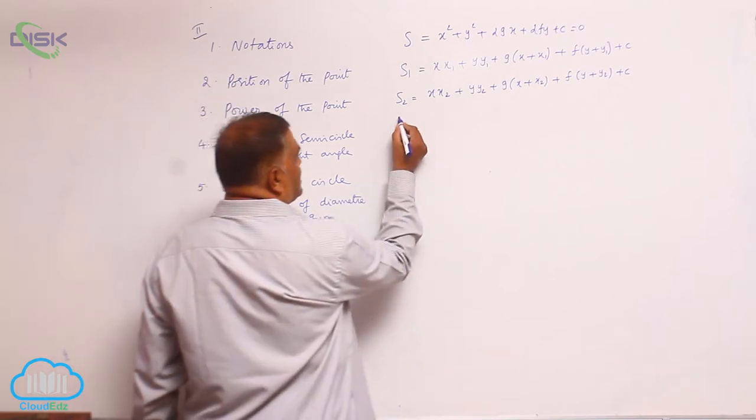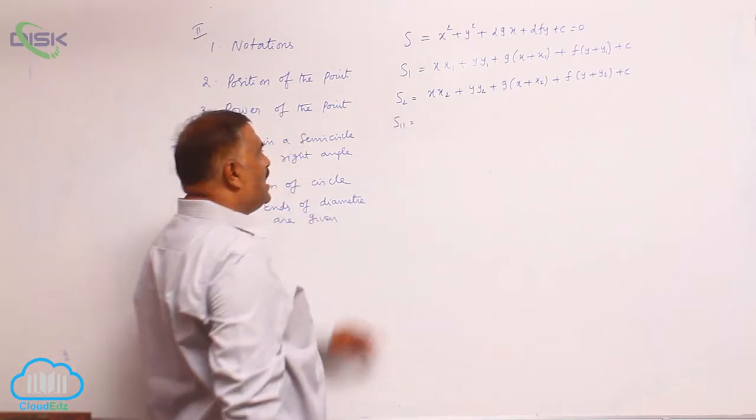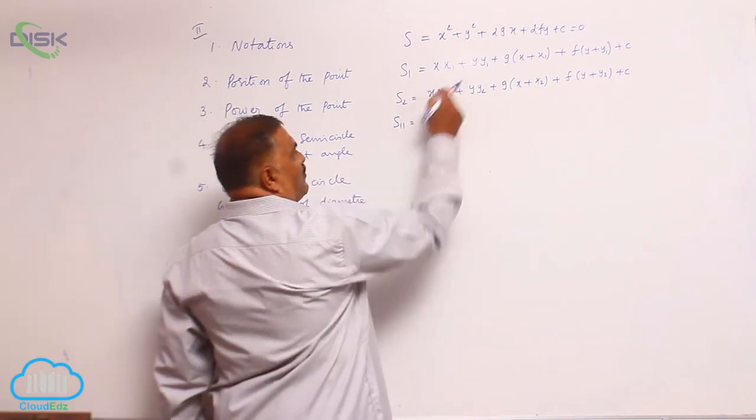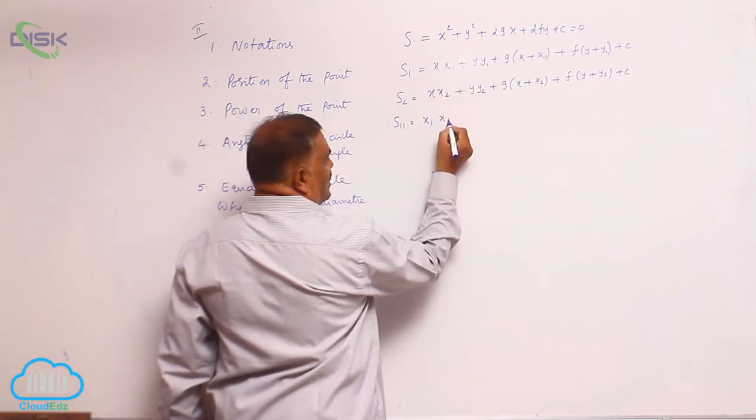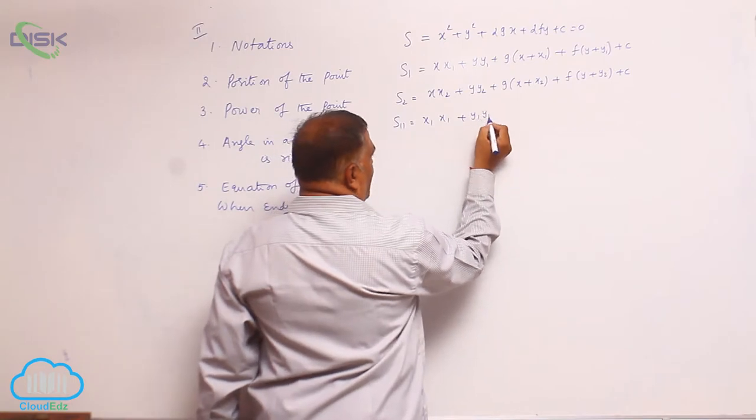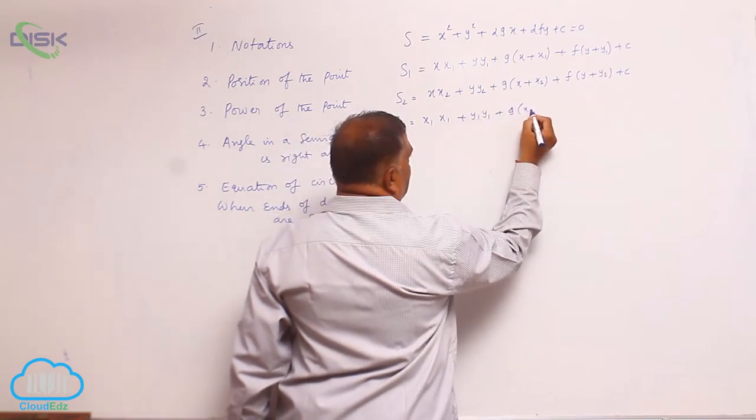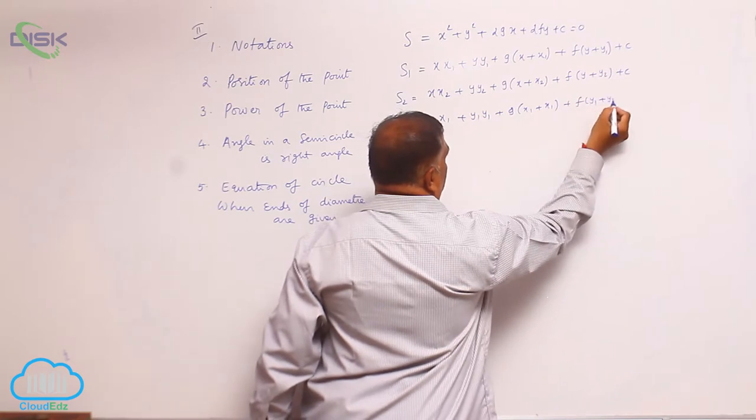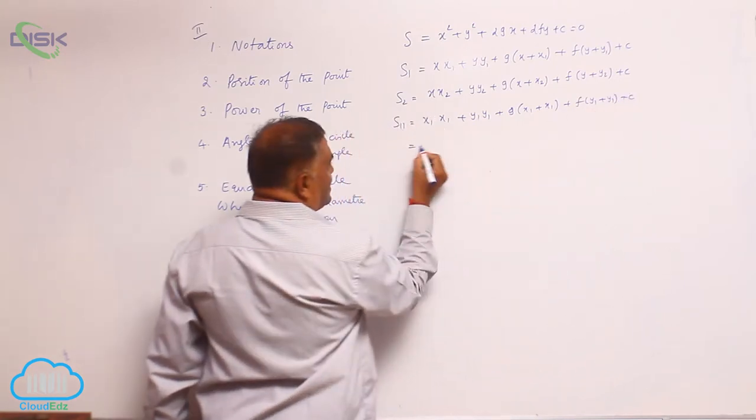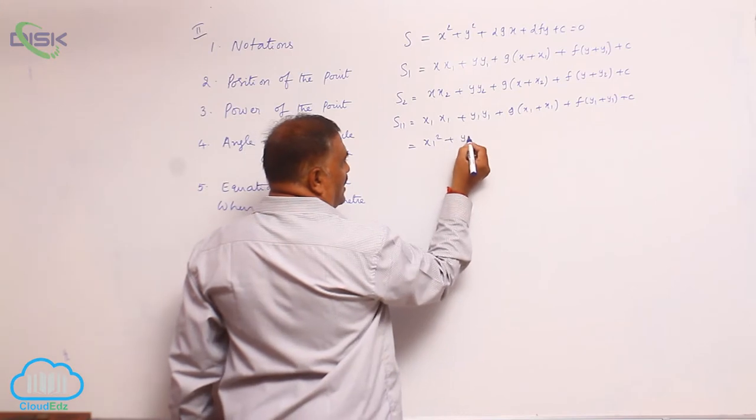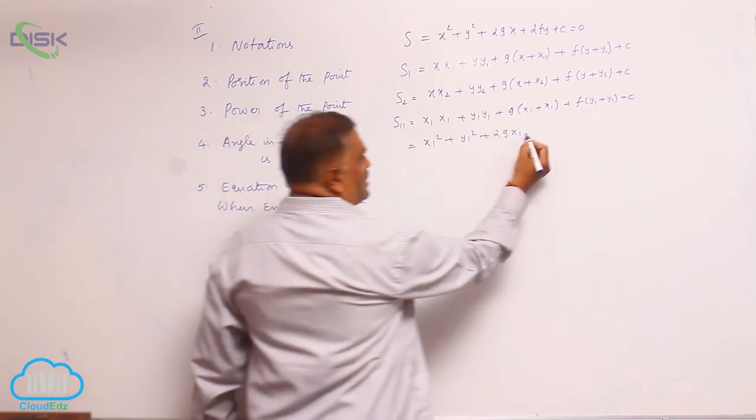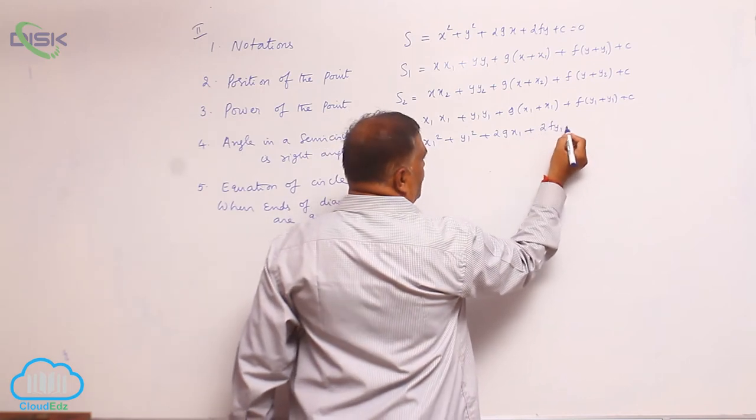Suppose you write S₁₁. That means in place of both x, you should apply the same subscript 1. That is x₁·x₁ + y₁·y₁ + g(x₁ + x₁) + f(y₁ + y₁) + c. This is x₁² + y₁² + 2gx₁ + 2fy₁ + c.